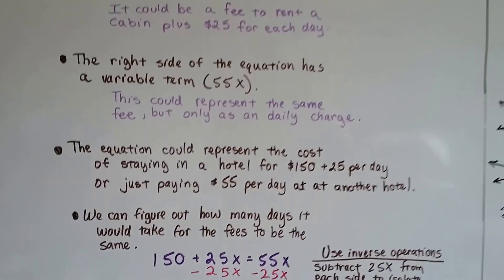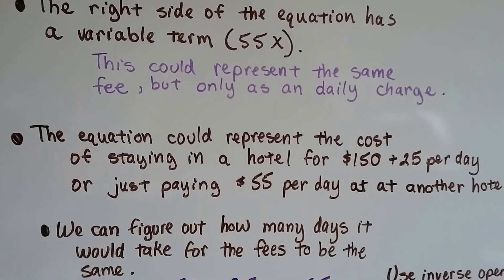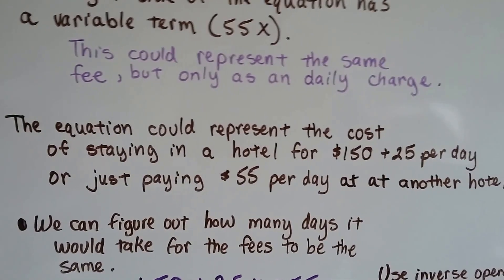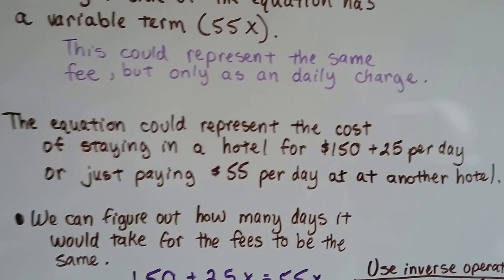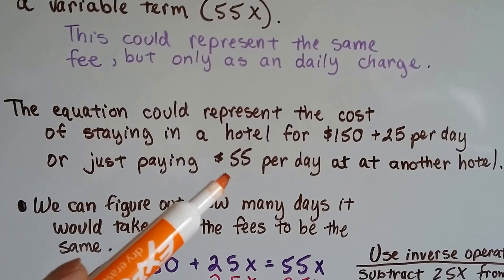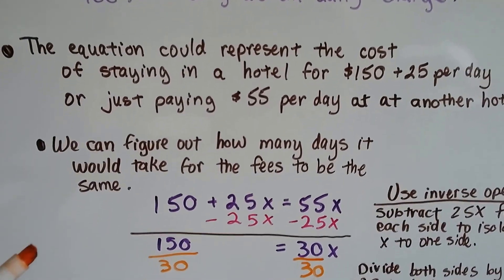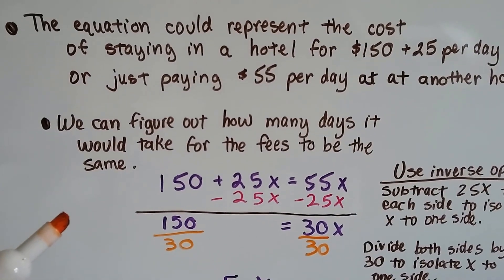The equation could represent the cost of staying in a hotel for $150 plus $25 per day, or maybe it's $150 plus $25 per person, or just paying $55 per day at another hotel. We can figure out how many days it would take for the fees to be the same.